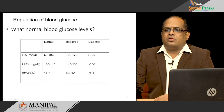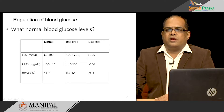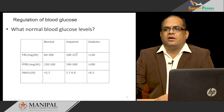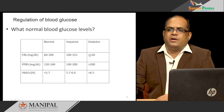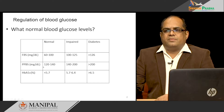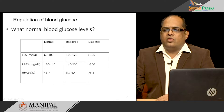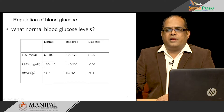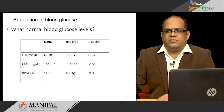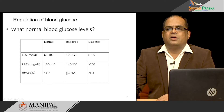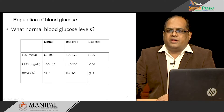If the fasting blood glucose level is above 100 till 125, we call it impaired fasting blood glucose level. Anything more than 126 milligram per deciliter, we call it diabetes. Similarly, in postprandial blood sugar, normal is 120 to 140, and impaired is 140 to 200. Anything more than 200 milligram per deciliter, we call it diabetes. In glycated hemoglobin, HbA1c is normally less than 5.7%; between 5.7 to 6.4% is impaired, and if more than 6.5%, we diagnose it as diabetes.